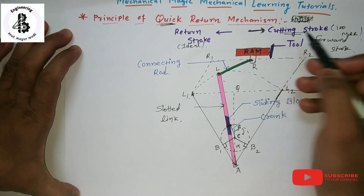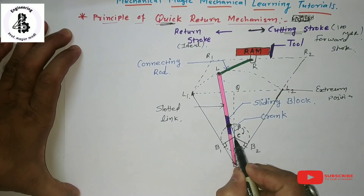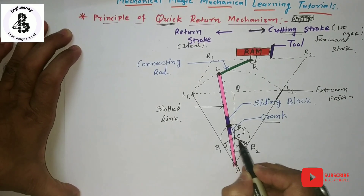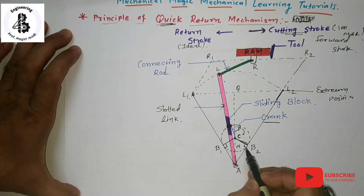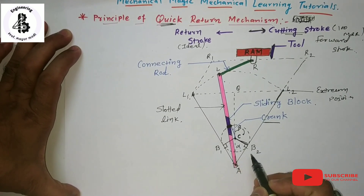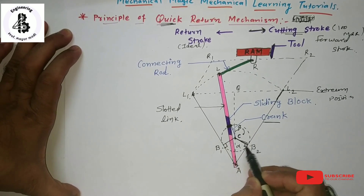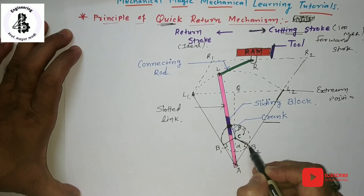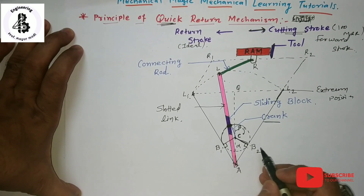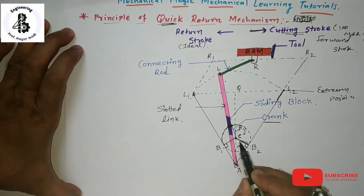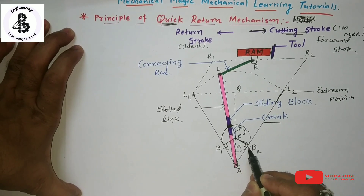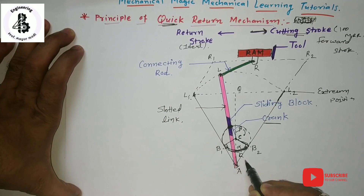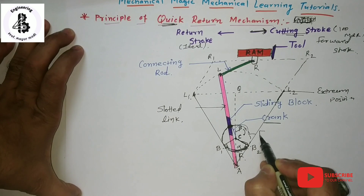During the forward stroke, the crank CB rotates from CB1 to CB2 — that is the complete swing for the forward stroke. During the return stroke, the crank rotates from CB2 back to CB1. The larger swing corresponds to the forward stroke and the smaller swing corresponds to the return stroke.